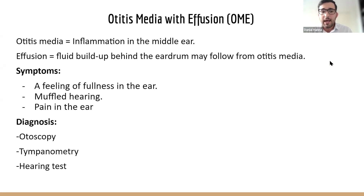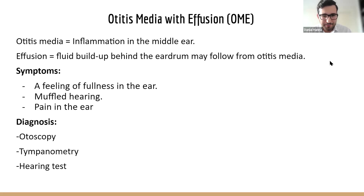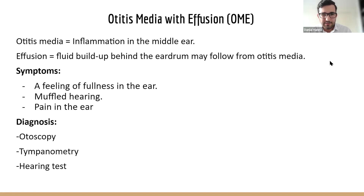The tympanic membrane in OME is often cloudy with impaired mobility, and air-filled levels or bubbles may be visible in the middle ear. When a patient comes in, they typically complain of muffled or blocked hearing, and sometimes ear pain. Diagnosis involves otoscopy to look for fluid behind the eardrum, followed by tympanometry — a good test for OME as it assesses tympanic membrane movement — and then a hearing test.